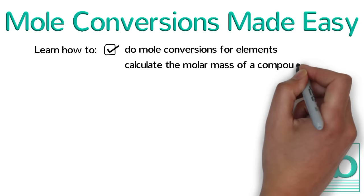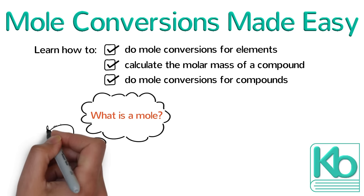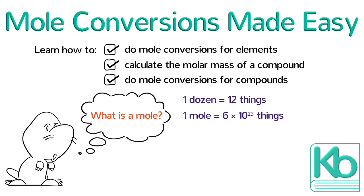But before we jump into all that, you might be wondering: what is a mole? Well, there are lots of different moles in the world, but in chemistry, a mole is simply a large number of things. It's kind of like a dozen, only bigger. One dozen is 12 things; one mole is 6 times 10 to the 23rd things. That is 600 billion trillion things — now that's a lot of things.